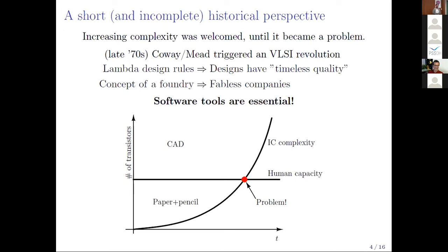Intel, on the other hand, has its own foundries. AMD had its own foundries, then sold them — that's how GlobalFoundries came into existence and became a fabless company. The irony is that now Intel is acquiring GlobalFoundries, so AMD has essentially sold its IC manufacturing business to Intel. For that reason, software tools are essential because without software tools you cannot do anything.